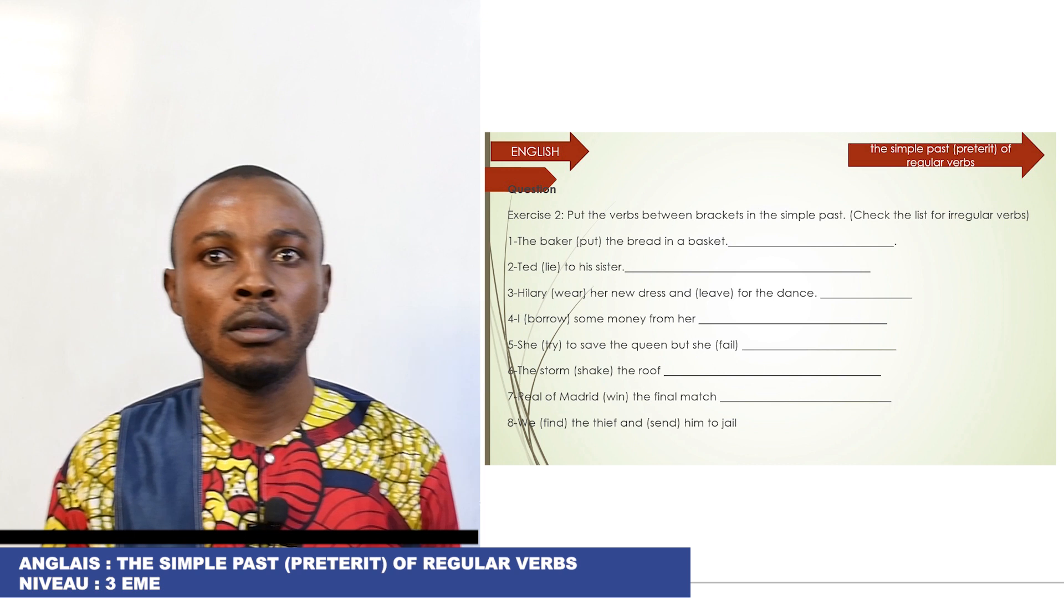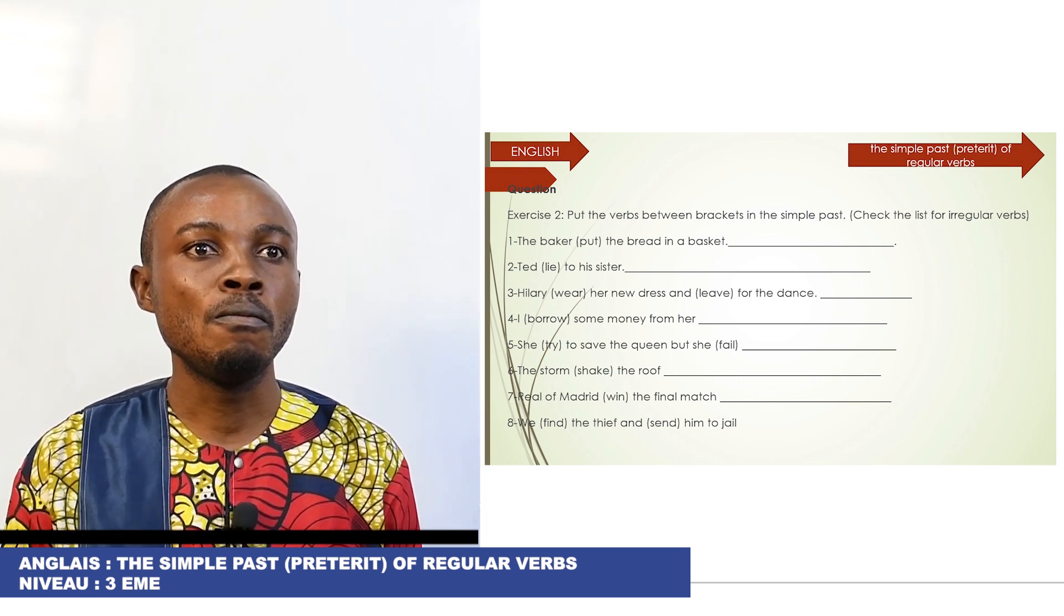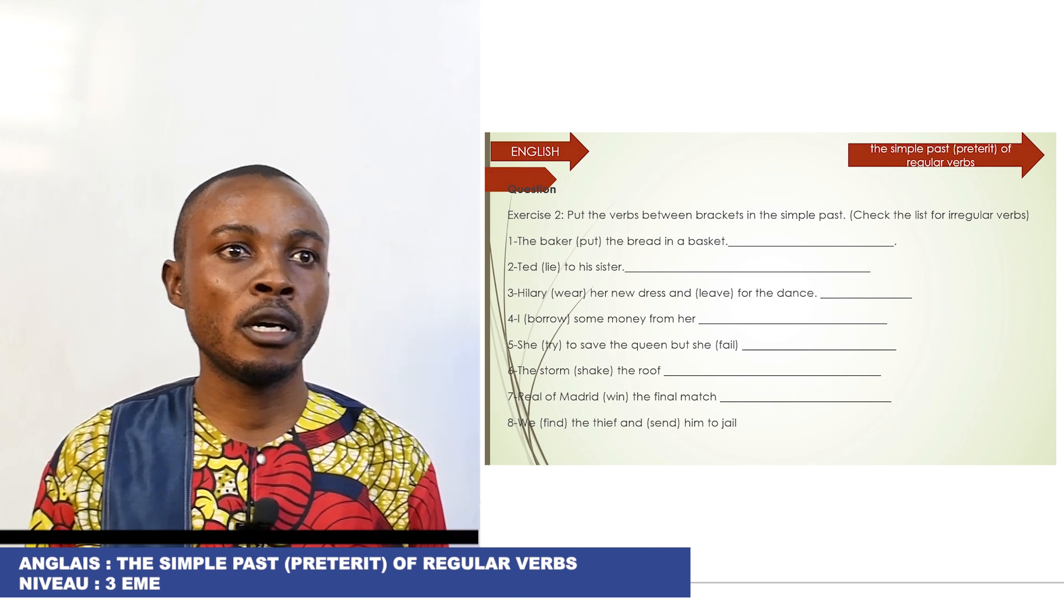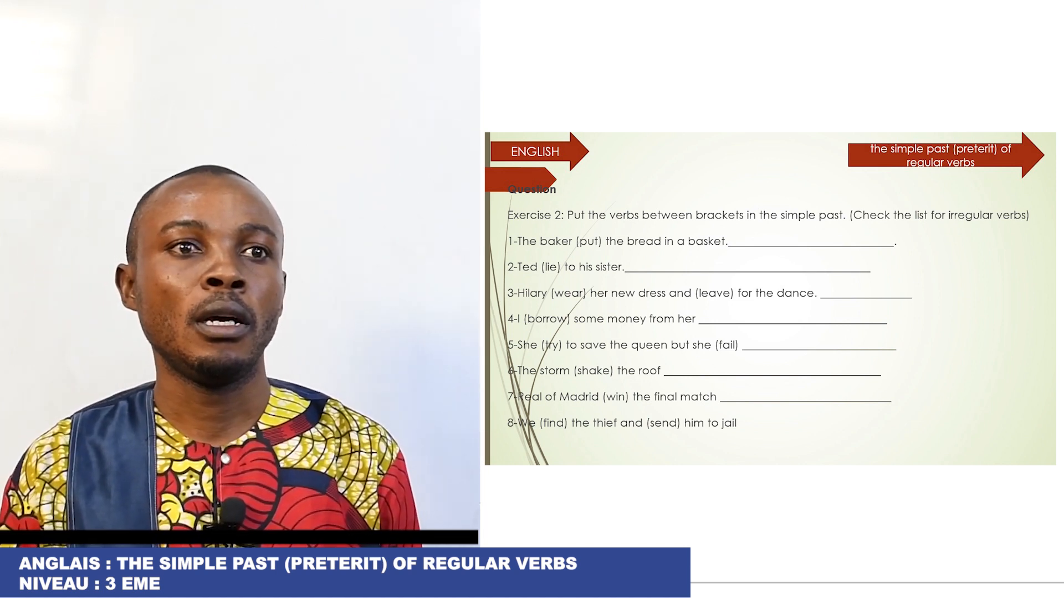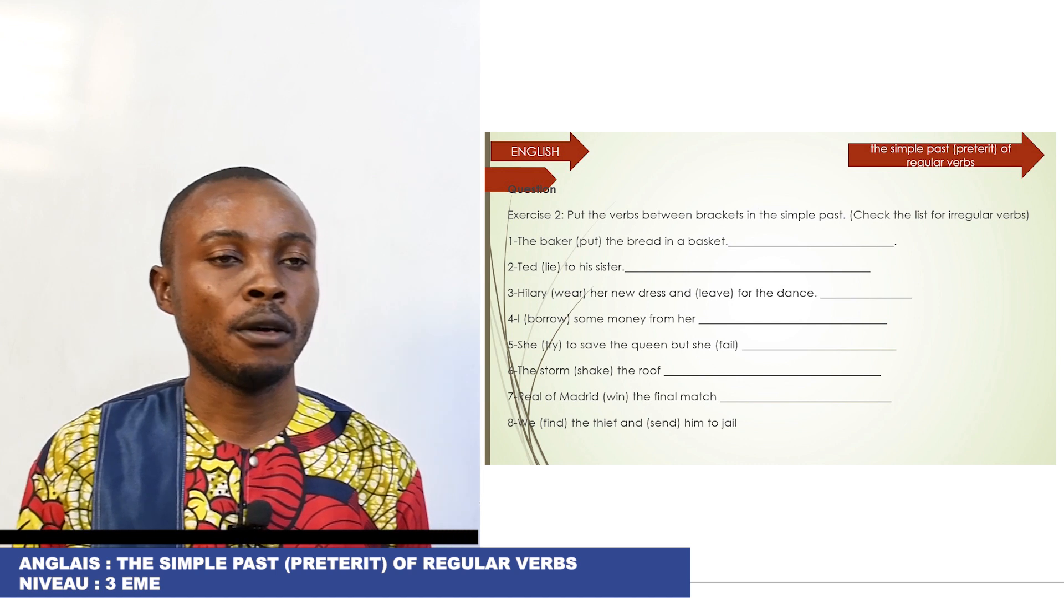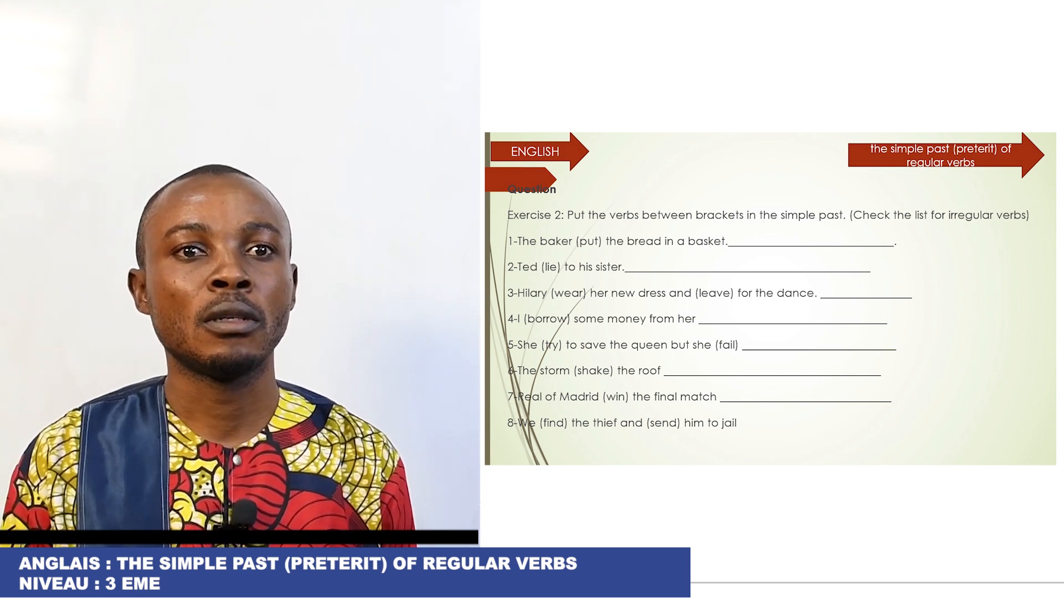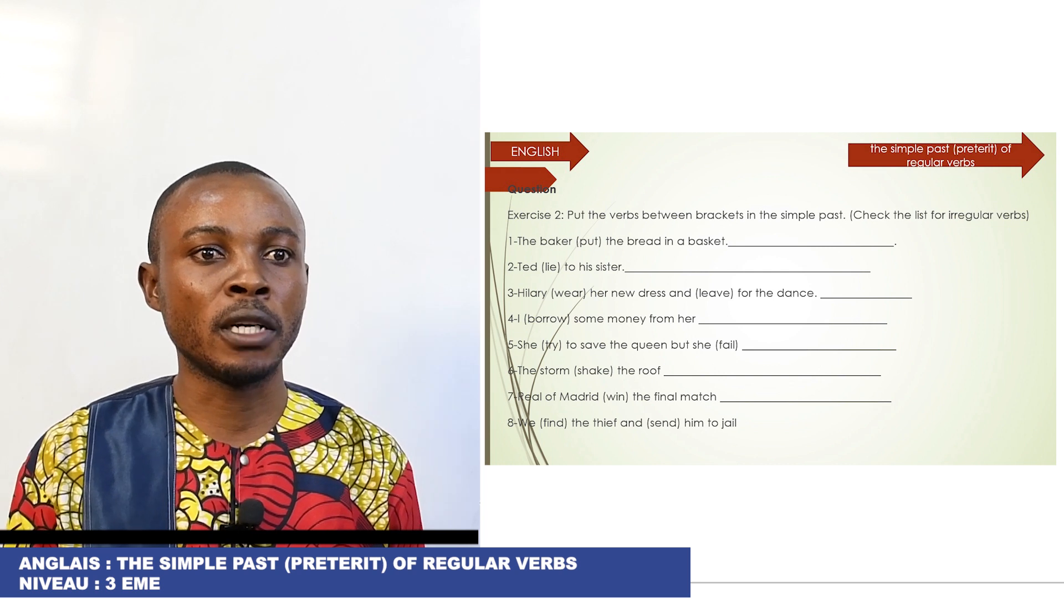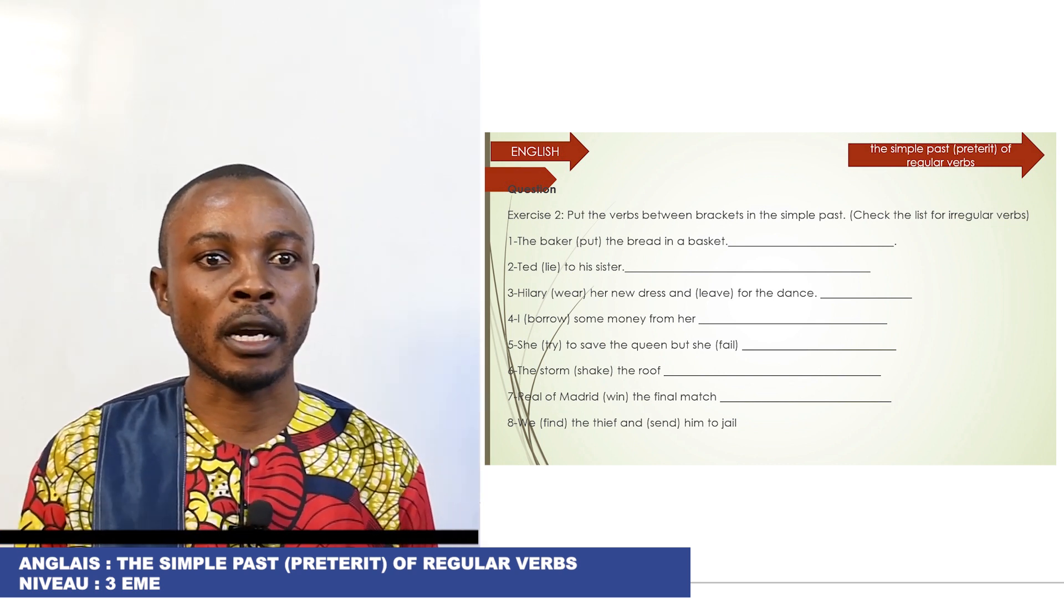Just a list for regular verbs. Number one: The baker put the bread in a basket. Number two: Ted lied to his sister. Three: Hillary wore her new dress and left for the dance. Four: I will borrow some money from her. Five: She tried to save the queen, but she fell. Six: The storm shared the roof. Seven: Real Madrid won the final match. Eight: We found the fifth and seventh team to zero.